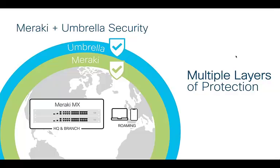Ideally you have both — a Meraki appliance protecting you against signature-based attacks, and Umbrella covering the DNS-based side of things and protecting your roaming users. When devices move out of your Meraki network, you still have that protection which follows your device. As you can see, we're talking about multiple layers of protection — none of our solutions claims 100% protection, and any security vendor who does isn't being honest — the best approach is to have multiple layers which increase overall security. With that, I'll hand over to Ishan who will demo the integration in the dashboard.